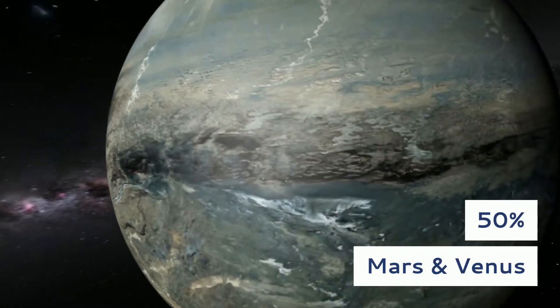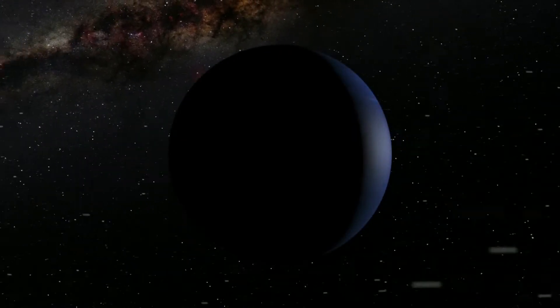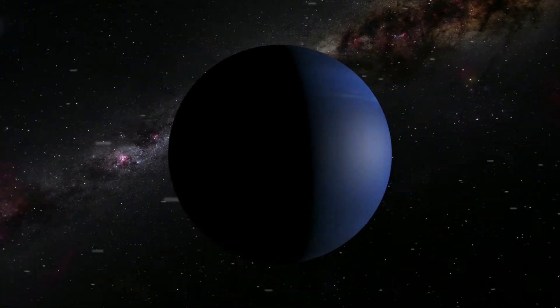Therefore, Mercury is closer. The same principle holds true for all the planets. Even Neptune is closer on average to Mercury than Uranus.